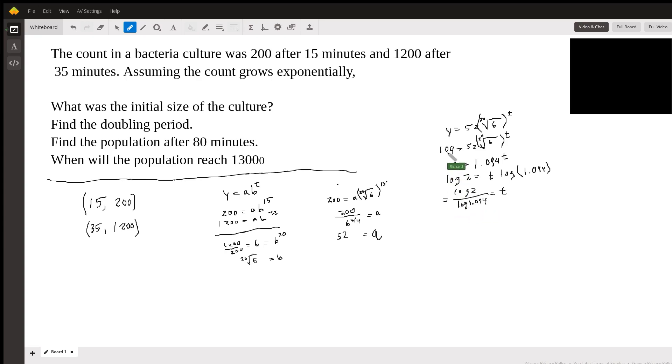So the doubling time is going to be log 2 over log 1.094. So let's get that. Okay. So that's giving me 7.74. 7.74 seconds is the, oh sorry, minutes. That would be the doubling time. Okay. So this is part, let's label these A, B, C, D. So A, we got over here, 52. B, we got here,